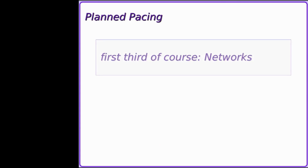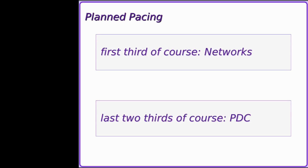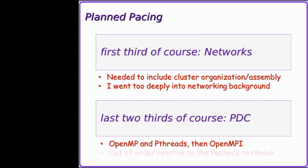The pacing for this course was one-third networking and two-thirds PDC topics. Unfortunately, I spent more time on general networking concepts than I needed to, at the expense of cluster-specific material. The course used the Peter Pacheco textbook, whose content order starts with OpenMPI and then moves on to OpenMP and P threads — the reverse of how I meant to approach it, so we had to hop around in the textbook.